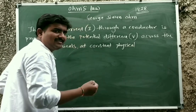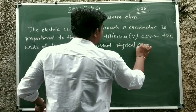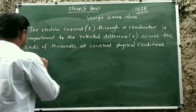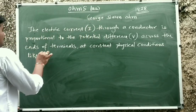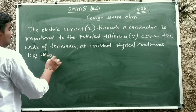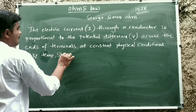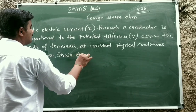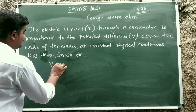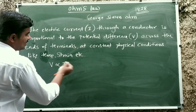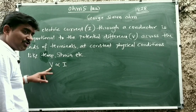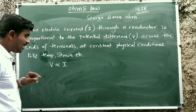Physical conditions means temperature, strain, etc. Mathematically, I can write it as V is directly proportional to I, or I is directly proportional to V, where V is electrical potential difference and I is electrical current.